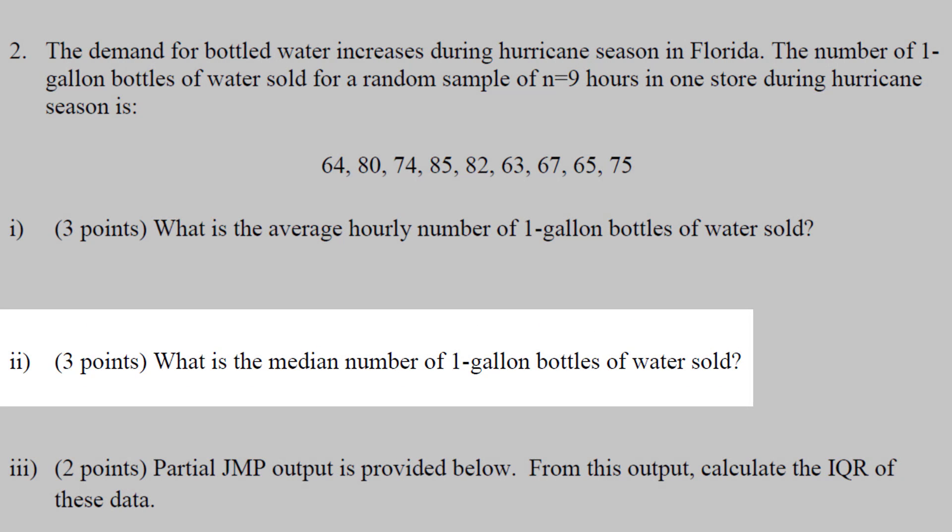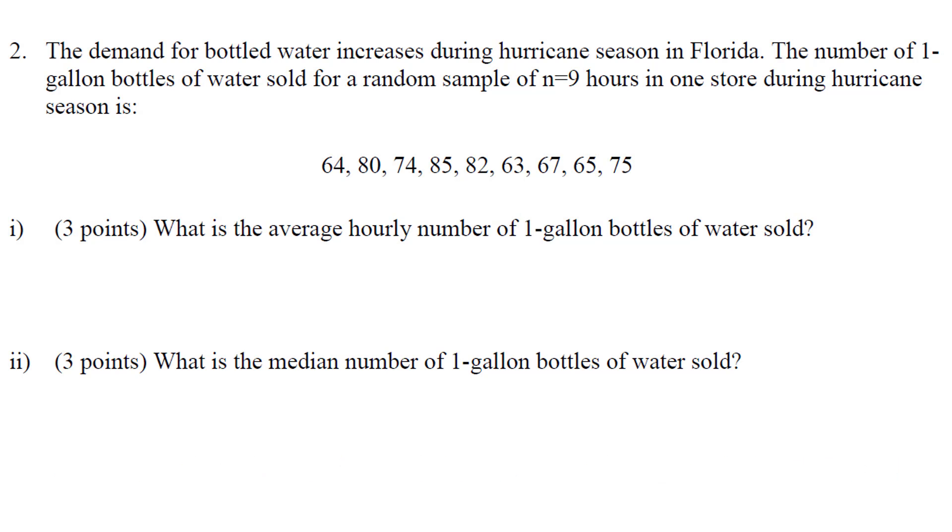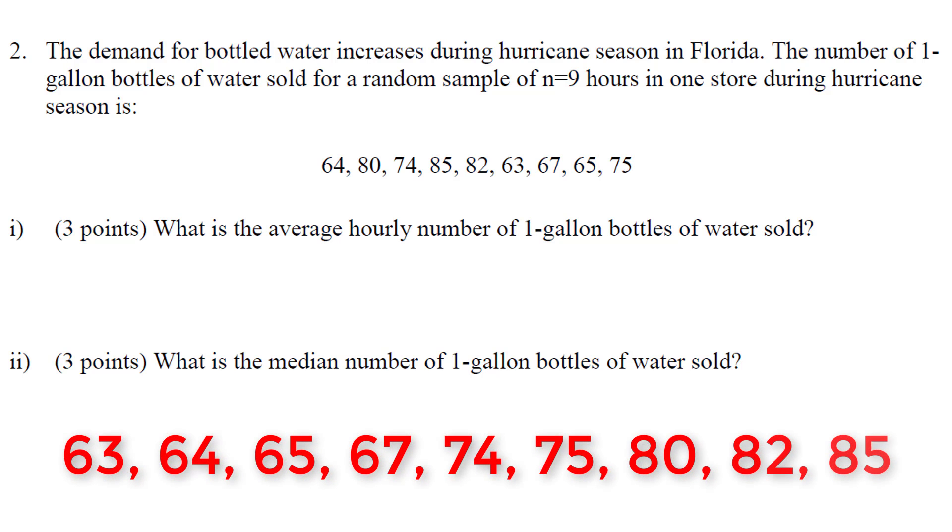Next we need to calculate the median, and to calculate the median we need to find the middle number. Now with a small data set like this, the easiest thing to do is to put the numbers in order. With nine numbers there actually is a middle number. You'll notice the fifth number has four numbers above it, and four numbers below it.